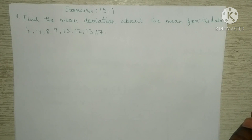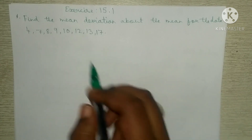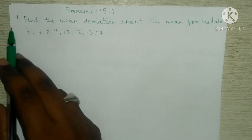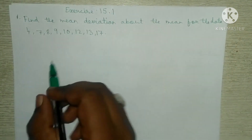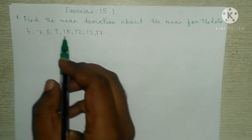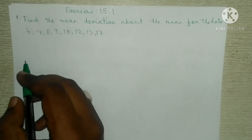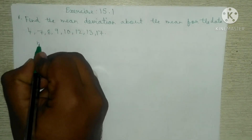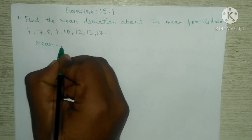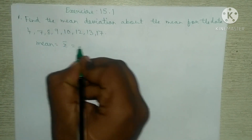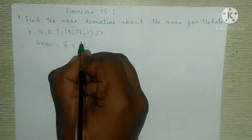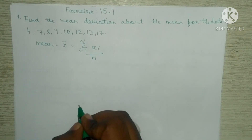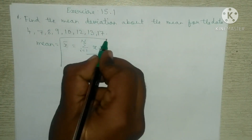Now we are going to learn about the formulas of exercise 15.1. The first question is: find the mean deviation about the mean for the data 4, 7, 8, 9, 10, 12, 13, 17. For this first question, you have to use the mean formula. Mean, x-bar, is equal to summation from i = 1 to n of x_i, all divided by n. This is the mean formula.